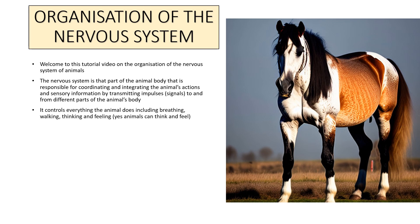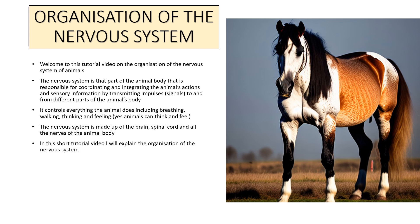The nervous system controls everything the animal does, including breathing, walking, thinking, and feeling. The nervous system is made up of the brain, the spinal cord, and all the nerves of the animal body.